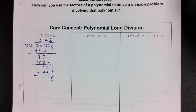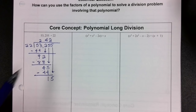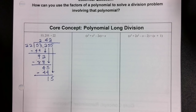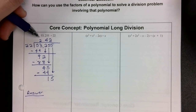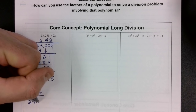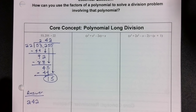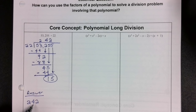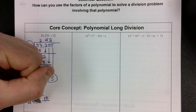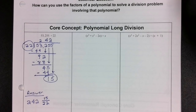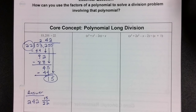22 does not go evenly into 15, so we could continue and get decimals, but we don't want decimals — we want exact answers. So our final answer is 242. We use the remainder as part of a fraction, so the final answer will be 242 and 15 over 22. We take our remainder and put it over what we're dividing by.